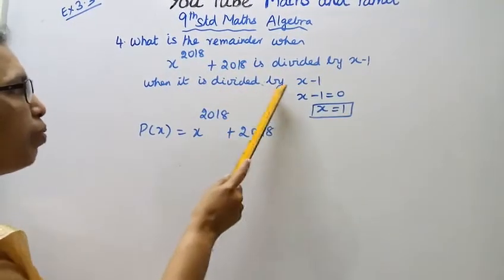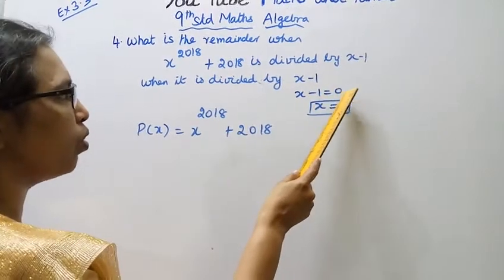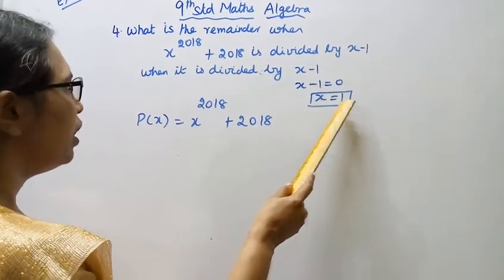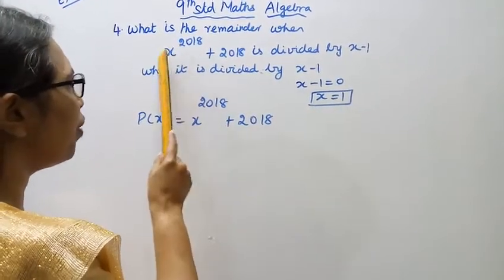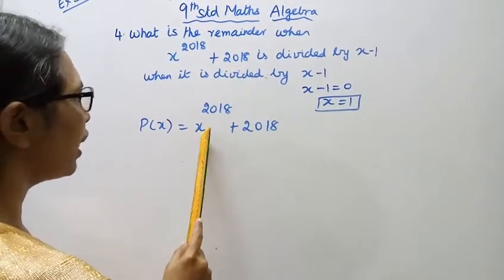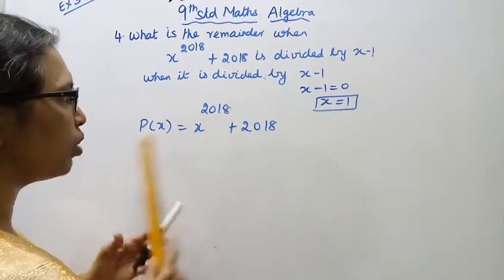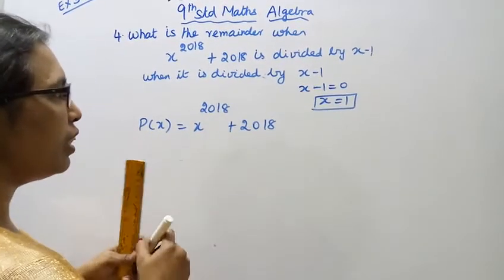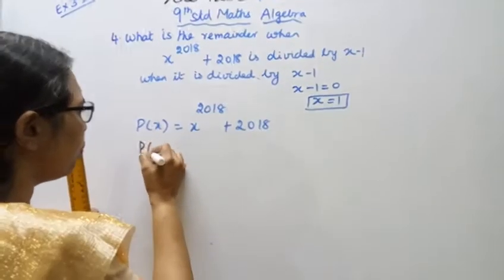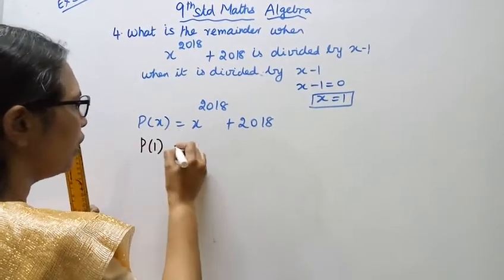When it is divided by x minus 1, x minus 1 equal to 0, so x equal to 1. P(x) is x power 2018 plus 2018. We find P(1).